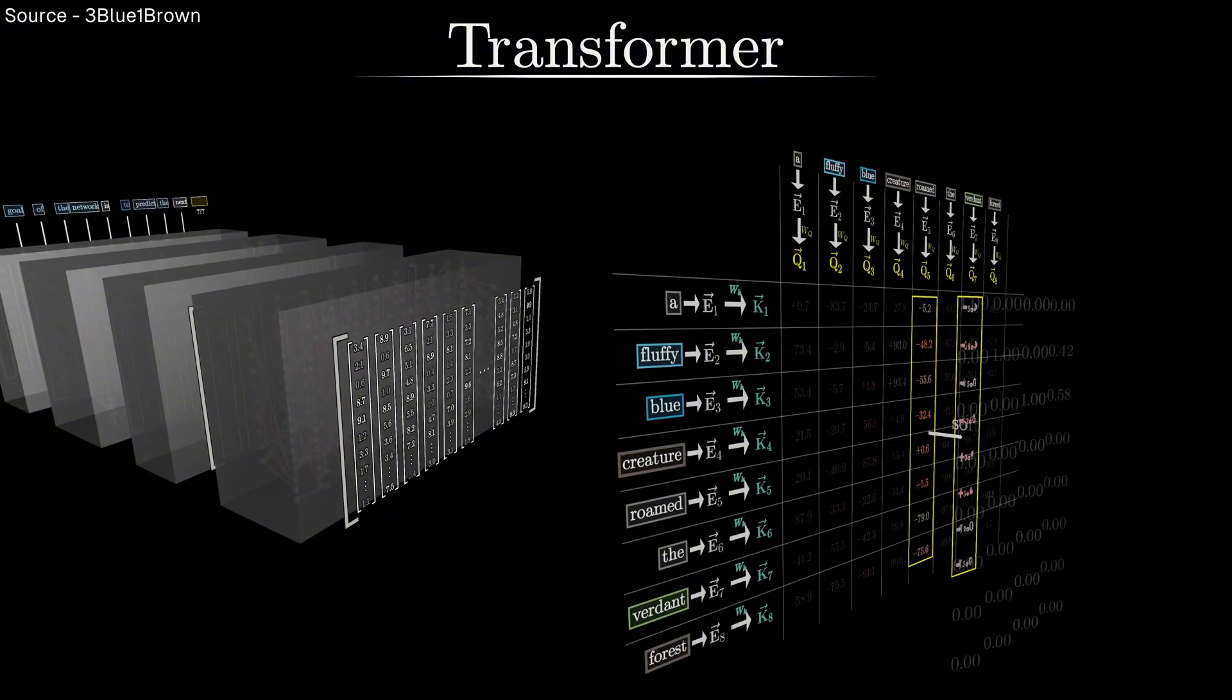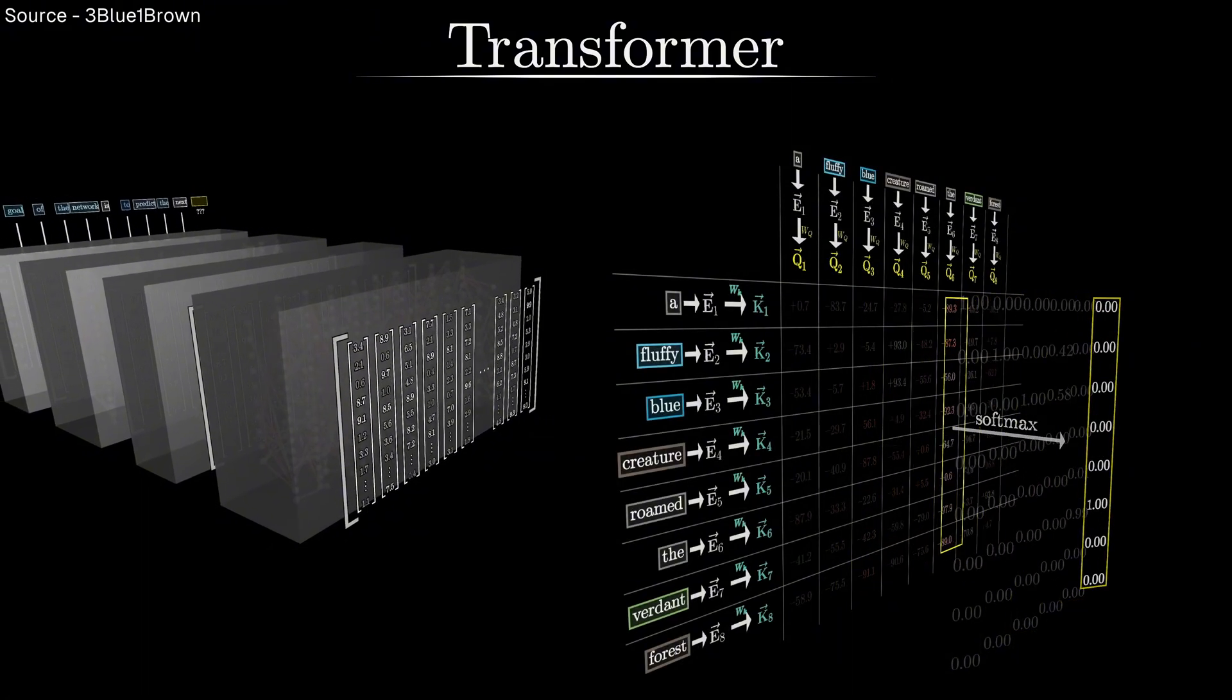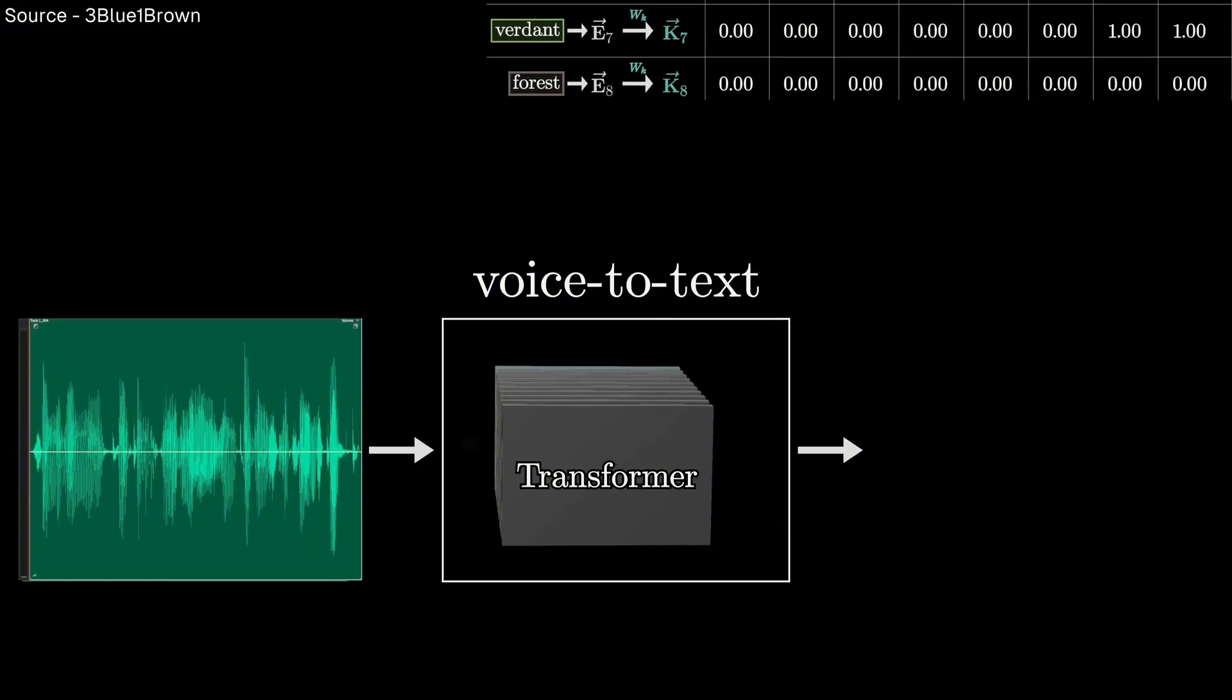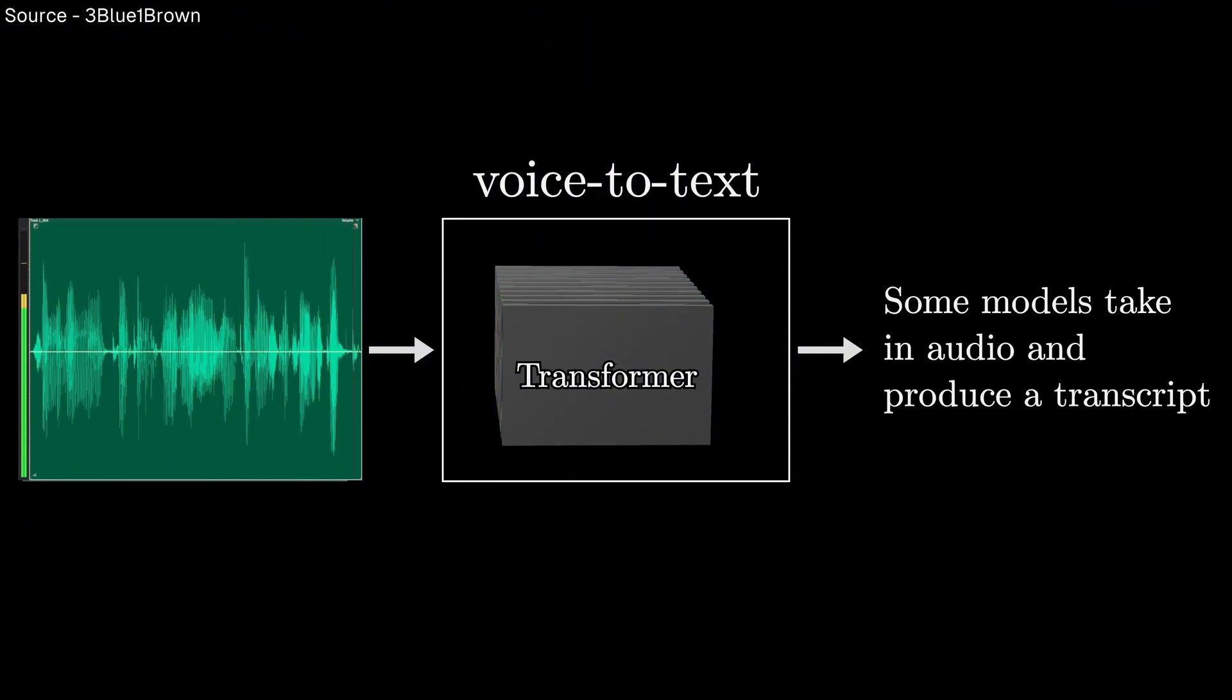The critics who say it's just pattern matching might be missing the point. Perhaps pattern matching, when scaled up sufficiently, is all you need. After all, what evidence do we have that human intelligence is anything more than extremely sophisticated pattern recognition?